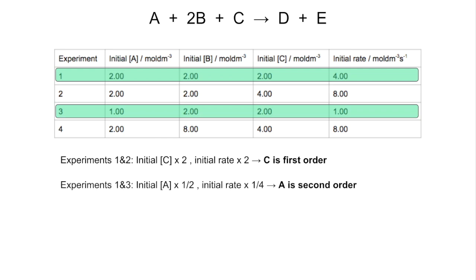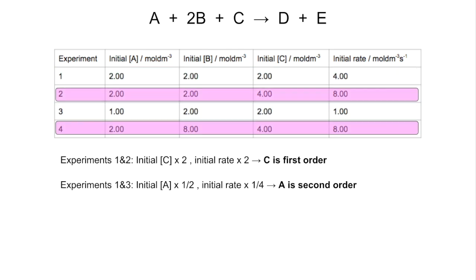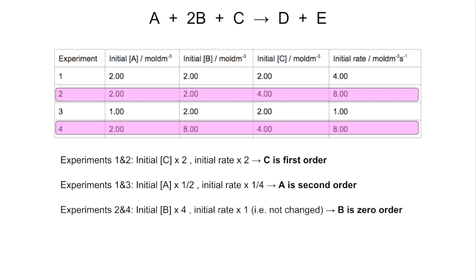The final pair is experiments 2 and 4. B is the only one changing now — the initial concentration of A is kept at 2 and C is kept at 4. B goes up by a factor of 4, from 2 to 8, but the rate doesn't change, so that's obviously zero order.